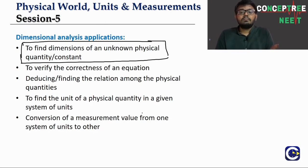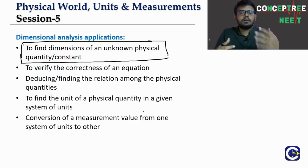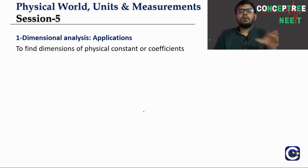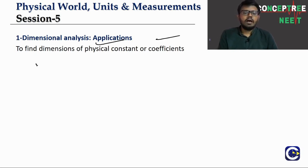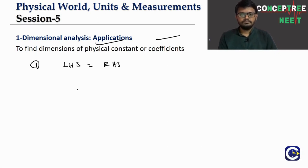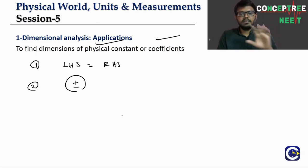We can find the dimensional formula of an unknown physical quantity or a constant by using the dimensional analysis approach. The key requirement is that we must have one formula which contains that unknown quantity or constant, and we should know the dimensional formulas of all the other quantities in that formula.